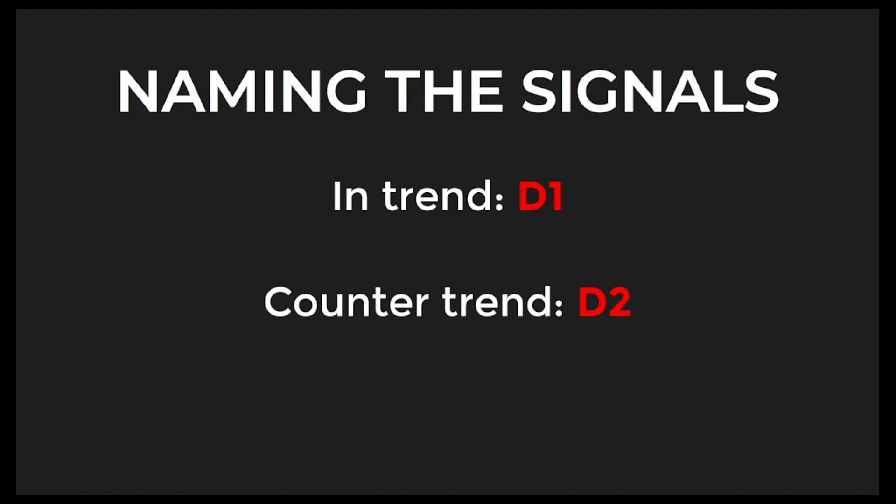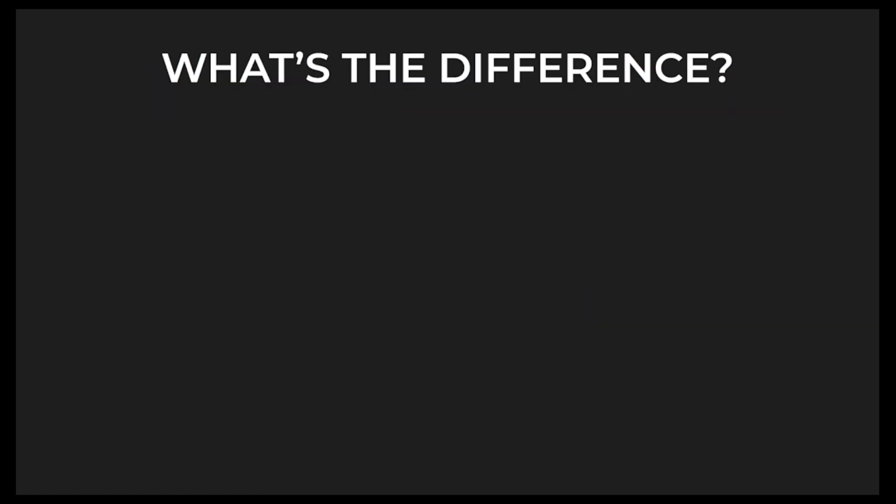The differences, again, are: in-trend is D1, counter-trend is D2. Write this down, screenshot this — you don't want to forget it. In-trend is D1 entries, counter-trend is D2.